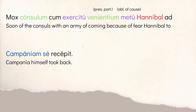Then: Mox consulum cum exercitu venientium metu Hannibal ad Campaniam se recepit. The subject is Hannibal. He recepit — he took himself back, he retreated, ad Campaniam, back south. Why? The ablative of cause: metu, because of fear — fear of the venientium consulum, the coming consuls, cum exercitu, with an army. So according to Eutropius, Hannibal goes up to the gates of Rome but retreats because of this approaching Roman army.